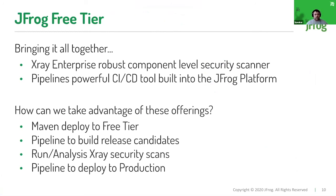Bringing this all together, we have the JFrog Free Tier which offers the X-Ray enterprise component-level security scanner and Pipelines built in as well. There's no reason you couldn't use Artifactory OSS with Free Tier. For example: Maven deploy to Artifactory OSS, use Pipelines to build release candidates from snapshot builds, run X-Ray security scans, and use Pipelines to deploy to production — all free, no credit card required.